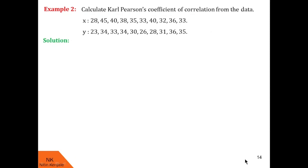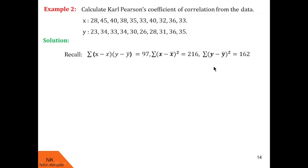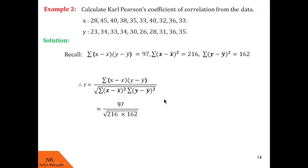Let us carry forward all this data and substitute these values into the formula for coefficient of correlation. The numerator becomes 97, and in the denominator we have the square root of 216 into 162. When we calculate this, we find r is equal to 0.5185. This time also r is positive, so these two given data sets are positively correlated.